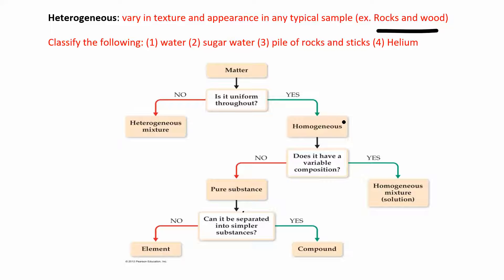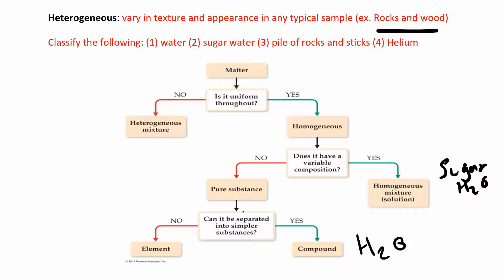Think of pure water, not water from the Jersey Shore. It's homogeneous. Does it have variable composition? No — you can't vary it without adding something else, so it's a pure substance. Can it be separated into simpler substances? Yes — water is H₂O, made of hydrogen and oxygen — so water is a compound. For sugar water: it's uniform throughout, so it's homogeneous, and its composition can vary, so it's a homogeneous mixture.